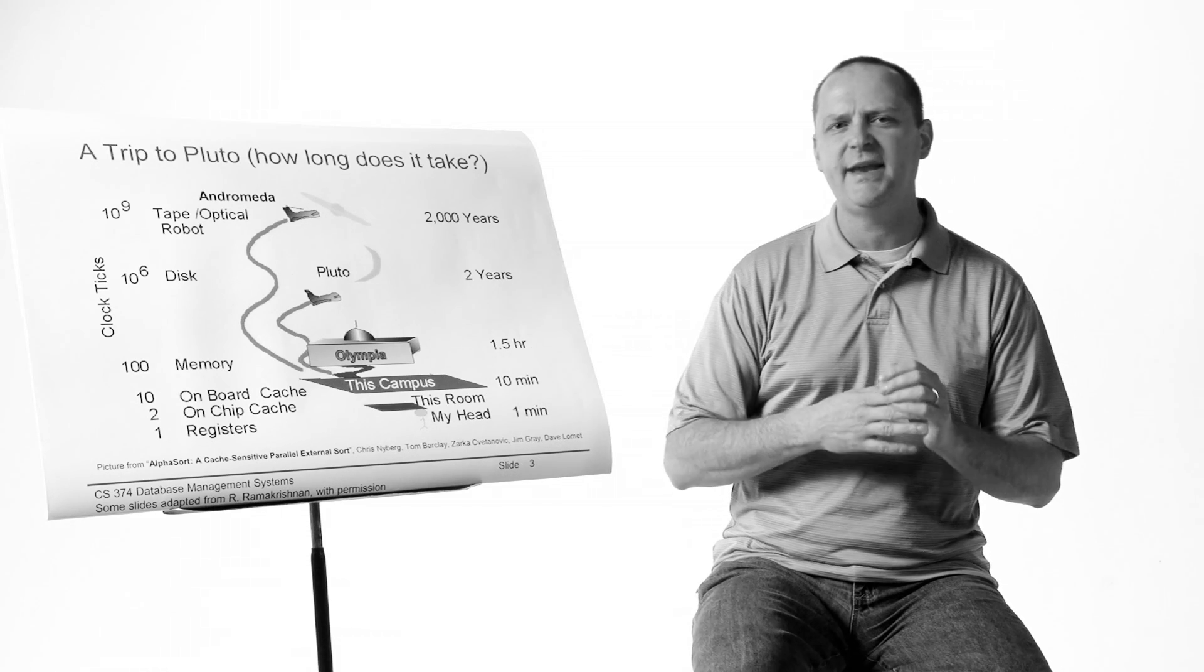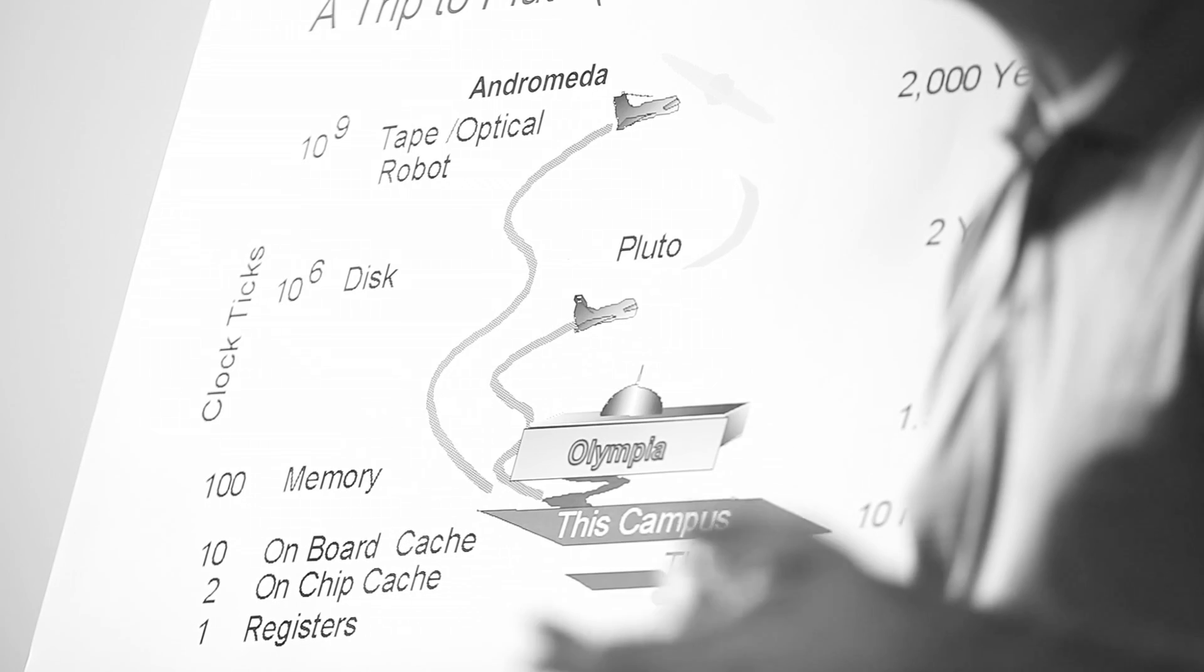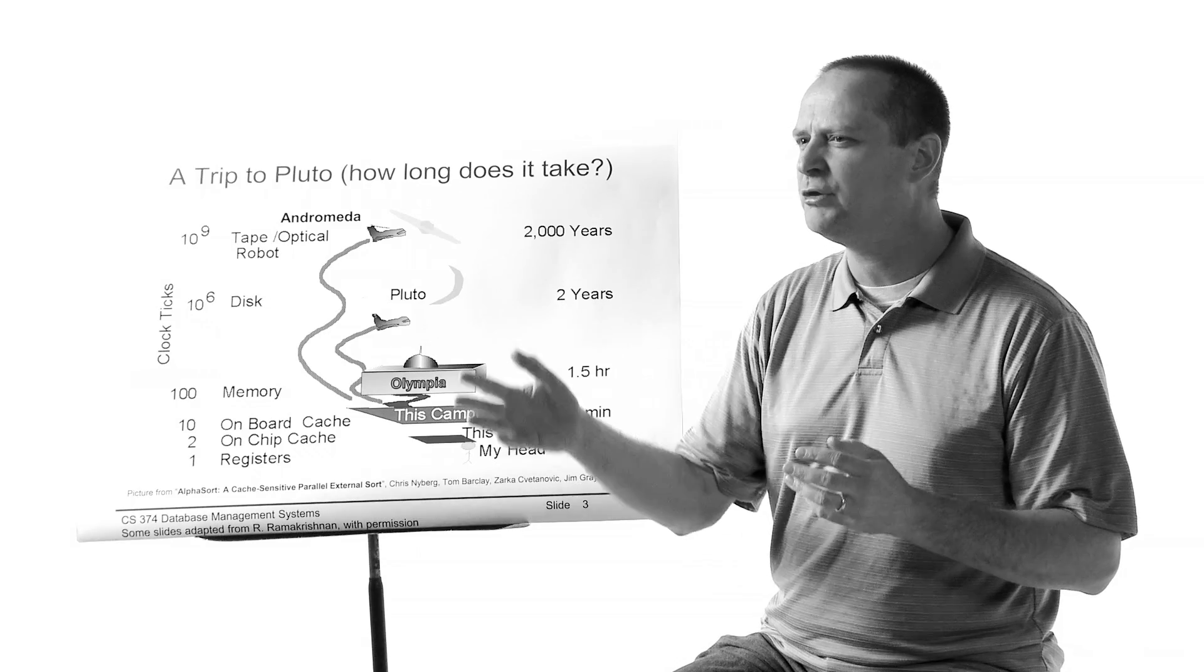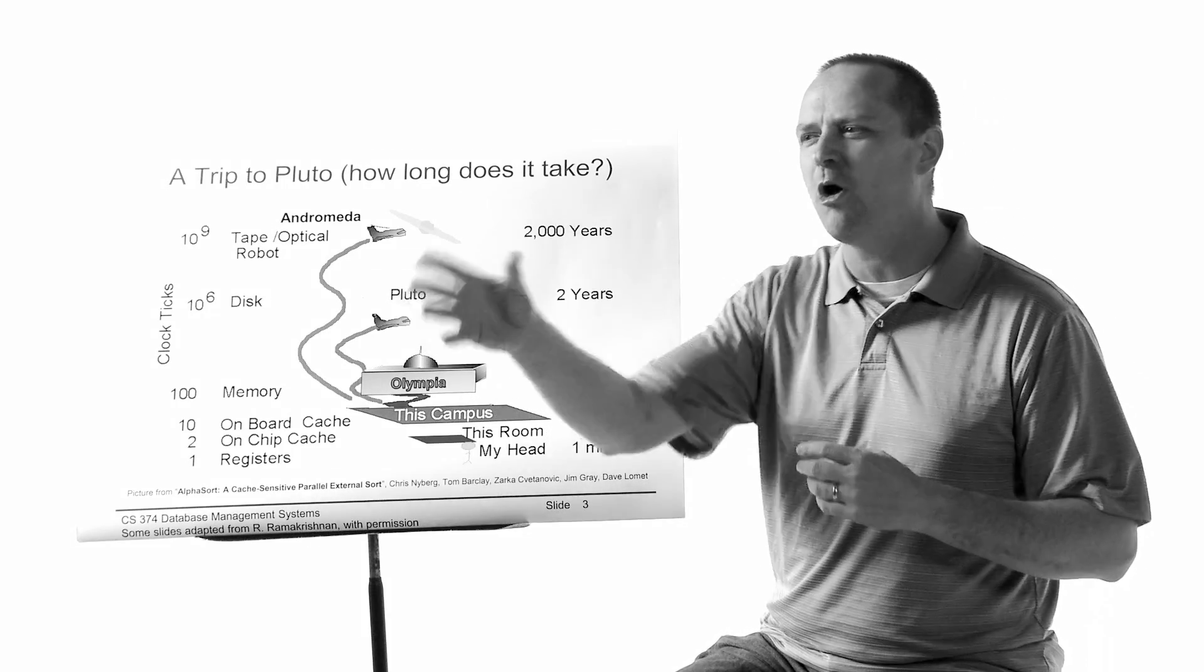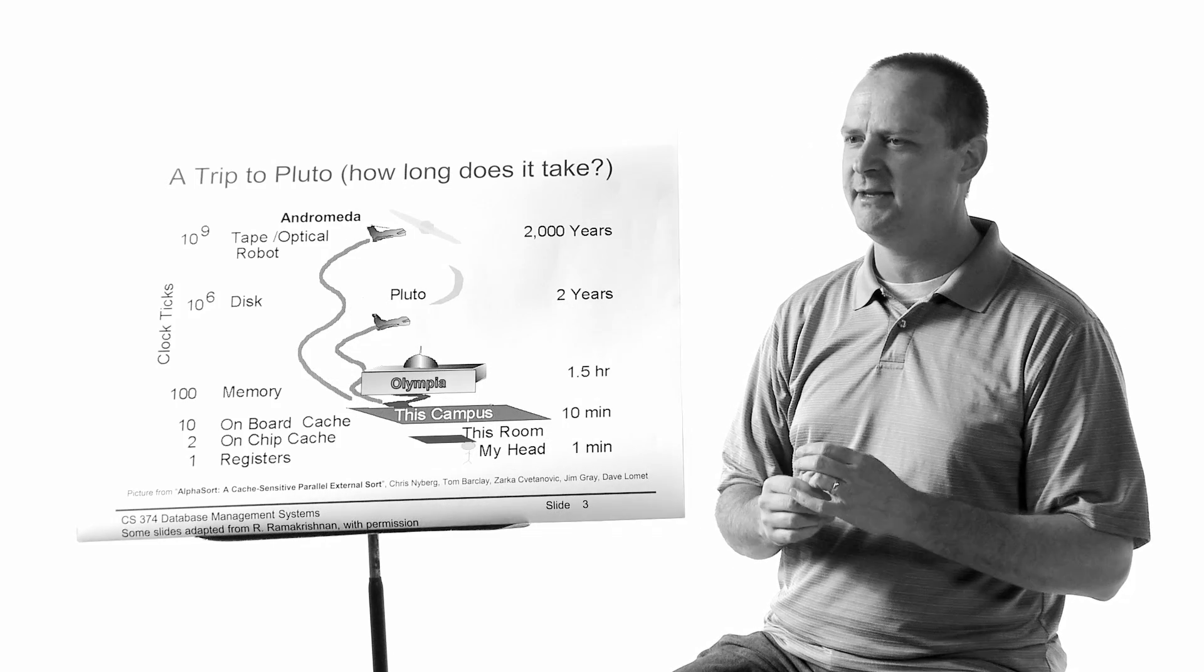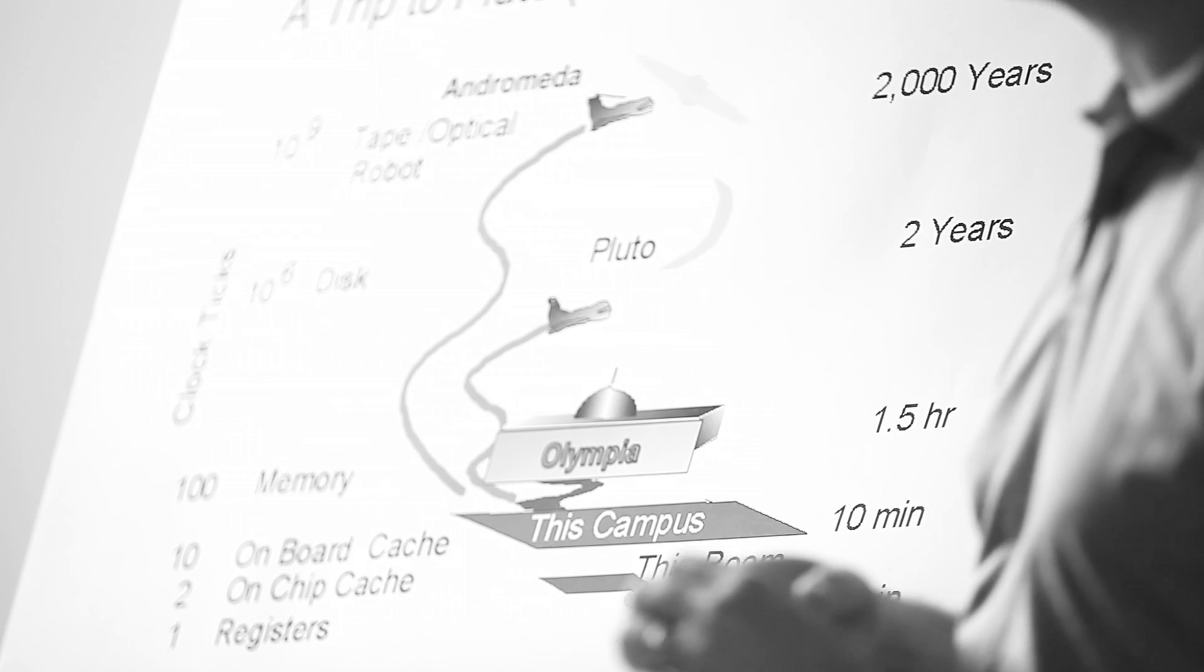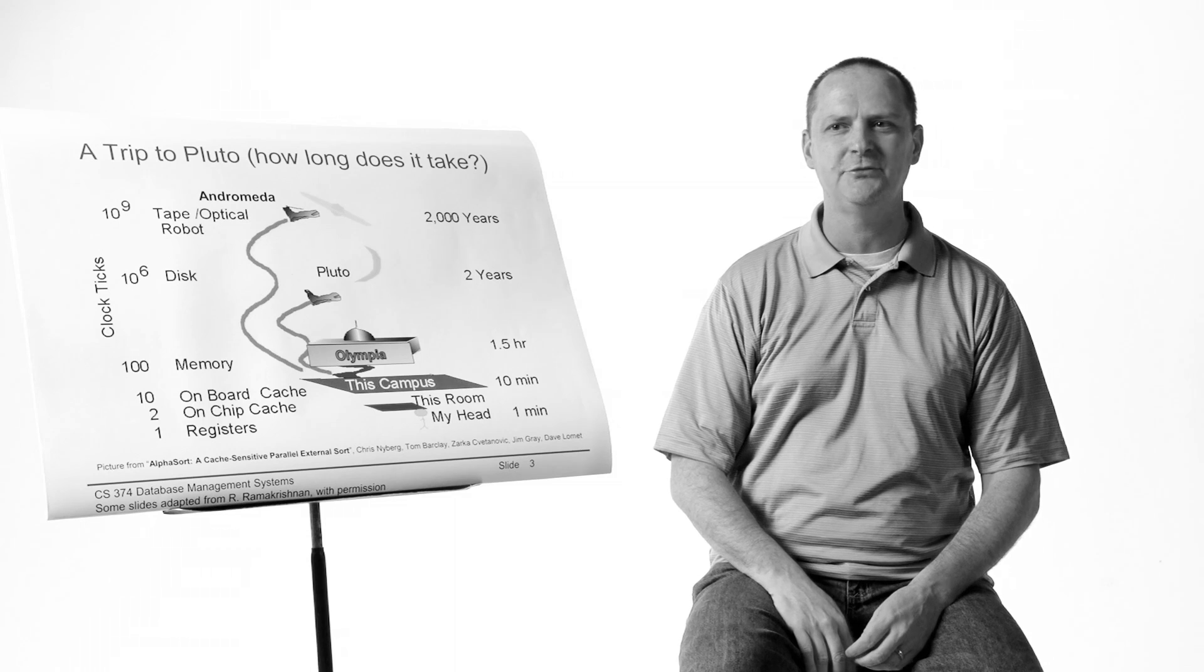If I need to get information and that information's in Olympia, it takes me about an hour and a half to fly from Spokane to Olympia. But if that information happens to be on Pluto, it's going to take me about two years to get there. Turns out that the ratio of two years to an hour and a half is about the same as the ratio of 10 to the sixth over 100.